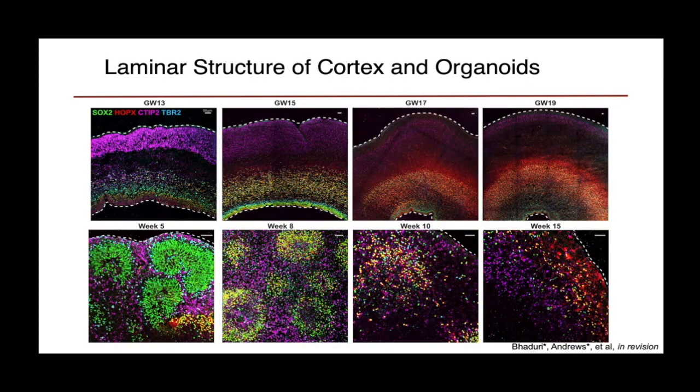We also wanted to look at how this is reflected in maturation. There's an extreme contrast where, in primary cortex, we see expansion of the lamina during the sampled time periods, with the progenitor layer expanding and creating scaffolds that allow neuronal migration into the cortical plate. In the organoid at early stages, you do see a beautiful rosette structure, but by week 15 the structure is largely lost, suggesting important differences in structure between primary and organoid samples.